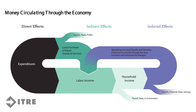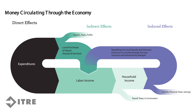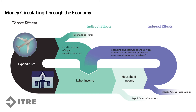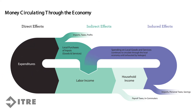Money circulates through an economy starting with direct effects and multiplying through indirect and induced effects. A direct effect can result from a variety of activities — buying an airline ticket, building a house, taking a vacation, eating dinner, and any other activity that starts the movement of a dollar from a person to pay for a good or service. The multiplier effect characterizes the power of that dollar bill recycling or circulating through an economy.